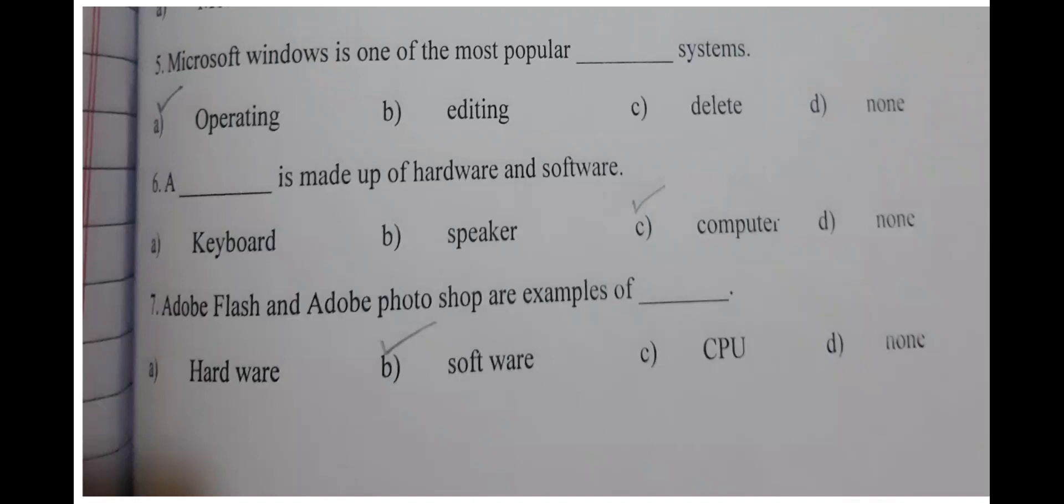Microsoft Windows is the most popular operating system. A computer is made up of hardware and software. You know that the computer basically has these two basic components.